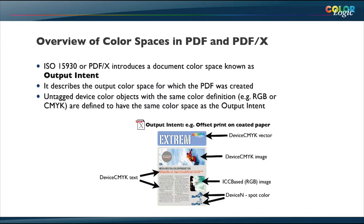A simple example of a PDF document: there is an output intent, which sounds like a different color space. In fact, it is basically the idea of how the document I'm creating is intended to be printed or output. If you create a PDF, the output intent tells the next person who gets that PDF — the printer or service provider — how to render it. And that output intent is basically an ICC profile; it could be RGB, could be CMYK.